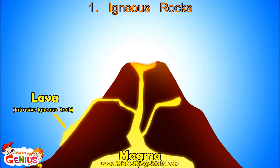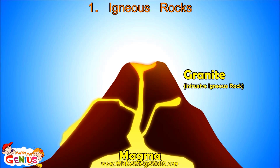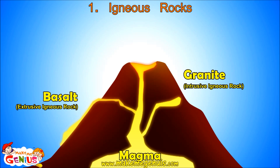Some of the magma can't come out and it settles inside the Earth. Whatever magma cools inside under the surface of the Earth changes into granite — a kind of igneous rock. The lava which comes out and gets in touch with air cools down faster, forming basalt rocks. Basalt rocks are also igneous rocks. So there are two main types of igneous rocks: basalt, formed when magma comes out, and granite, formed when magma cools down under the surface of the Earth.